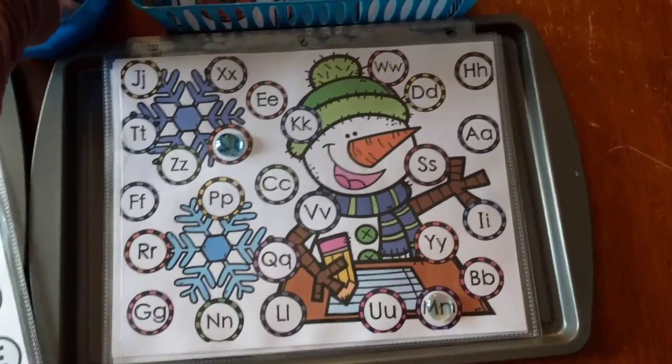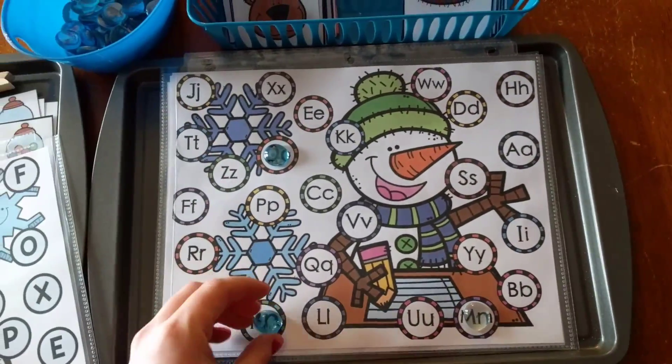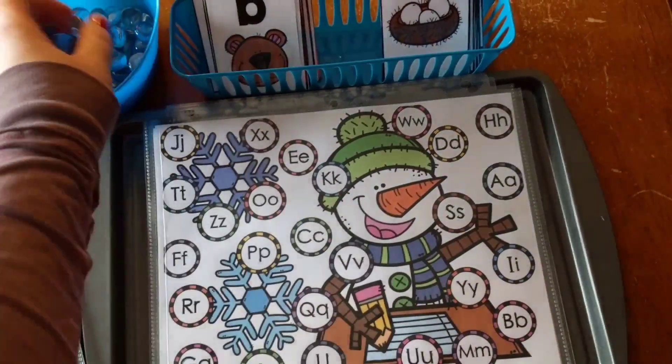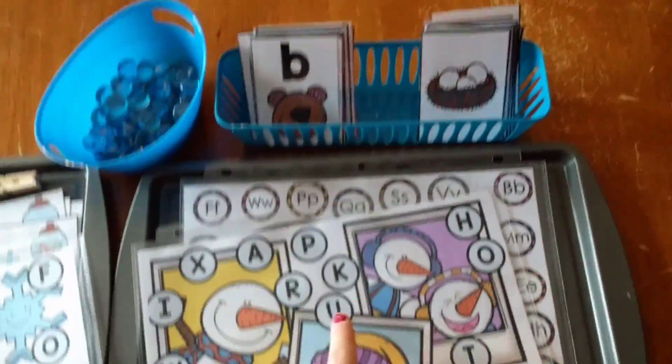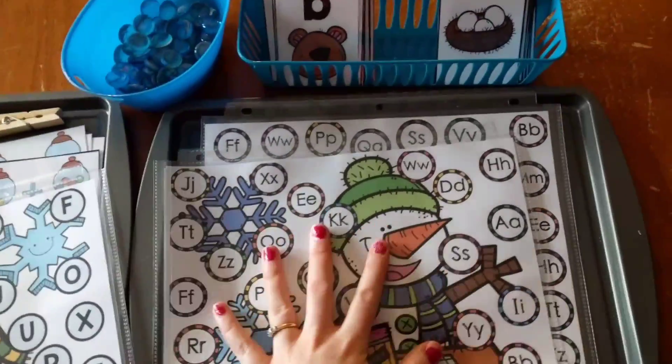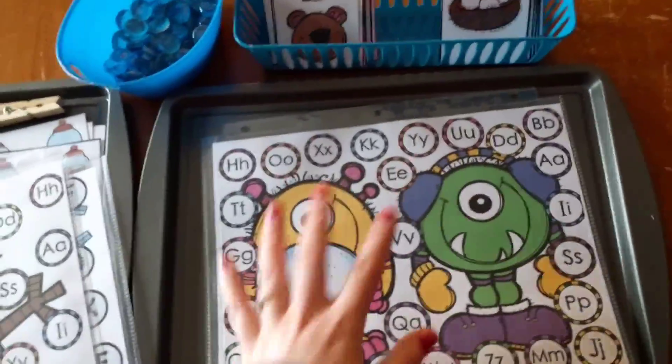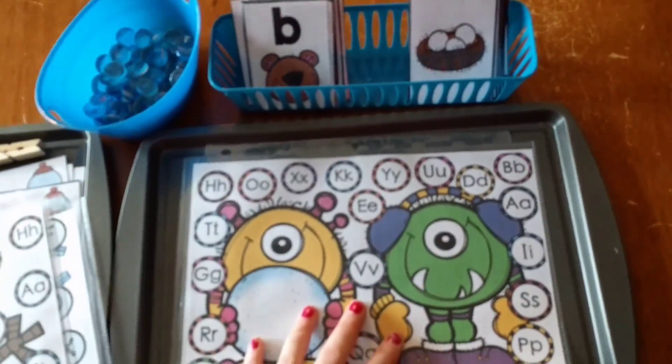So that's what he will use these cards for. Nest. N, N. Nest says N, N. Can you find that letter that says N? And that's what he will do. And he can use this mat for that. This one is for this because it's got capital letters on it. But he can use this mat for beginning sound cards. He can use this mat, and he can use this mat for the beginning sound activity.